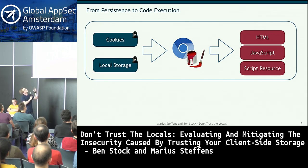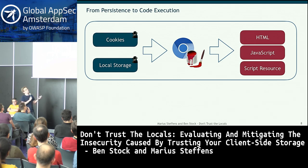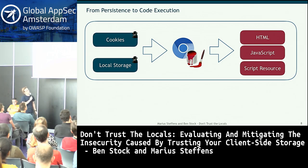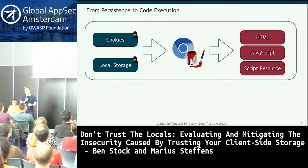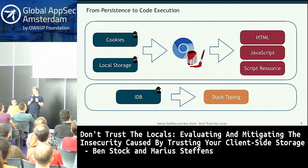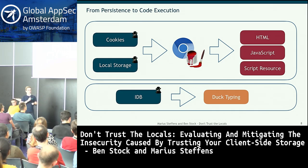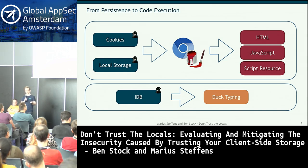Our taint engine covers cookies and local storage. IndexedDB wasn't available when the engine was built in 2013, so we did a second, simpler analysis for that. This second analysis uses the concept of duck typing: if something stored in IndexedDB looks like JavaScript or HTML code, we substitute a payload and see what happens.